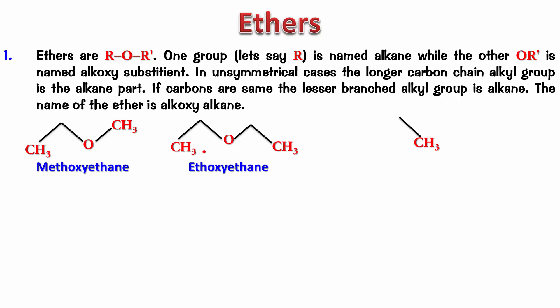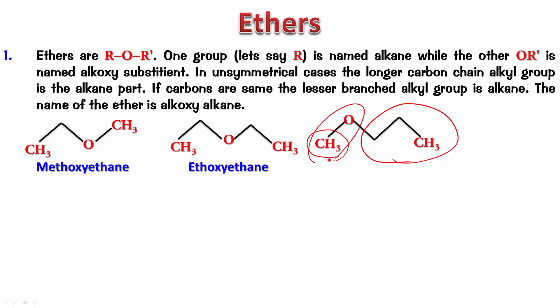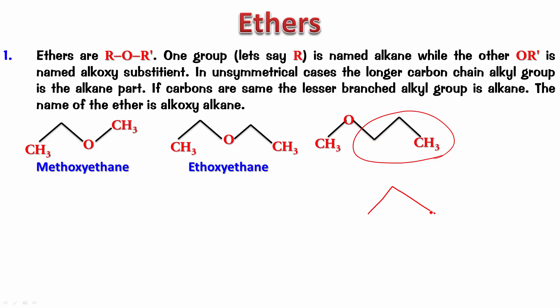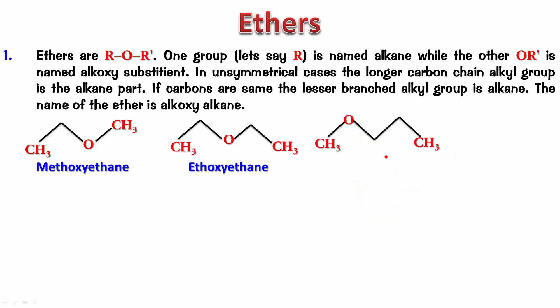Now let's try this one. On one side I have three carbon atoms, and on the other side only one carbon atom, so this is the alkoxy part. But when naming the alkane you can't simply say 'propane' — you also have to indicate on which carbon the alkoxy is attached. For example, with a three-carbon chain, the OMe could be on carbon one or carbon two, making it 2-methoxy. So you need to number the alkane part and give the lowest possible number to the carbon that contains the alkoxy. This is 1-methoxypropane.